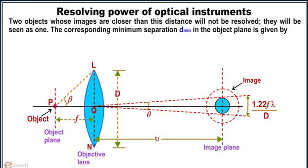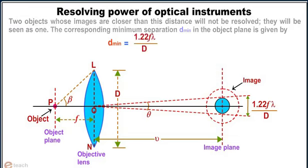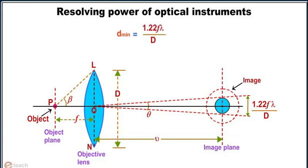The corresponding minimum separation d minimum in the object plane is given by d equals v times 1.22 lambda by capital D divided by m, which equals 1.22 lambda divided by capital D times v by m, which equals 1.22 f lambda by capital D. d minimum is equal to 1.22 f lambda by capital D.